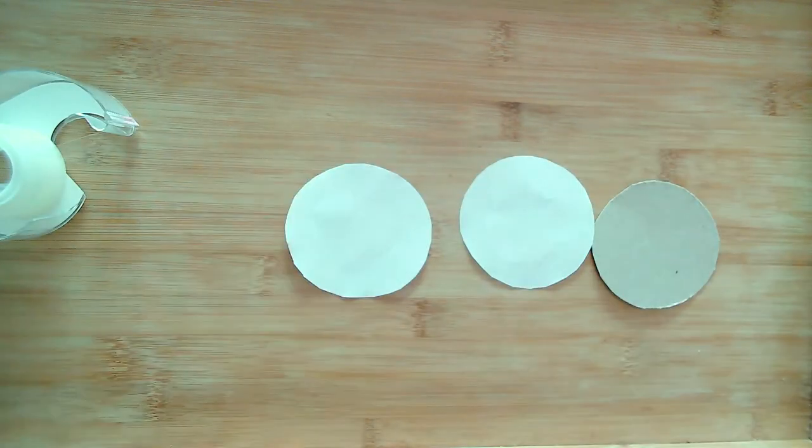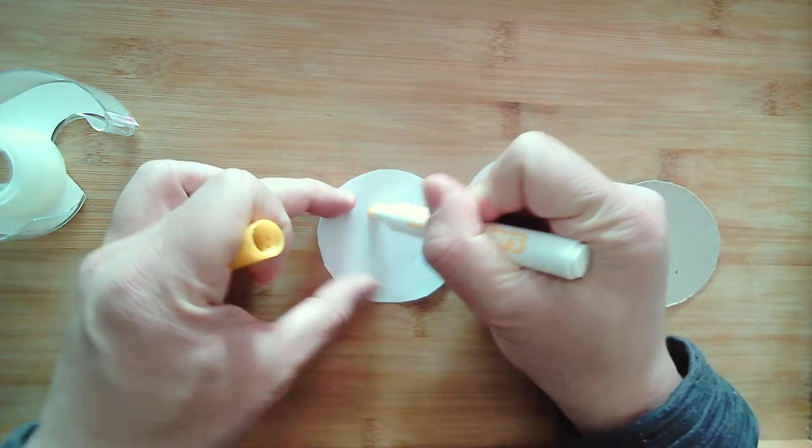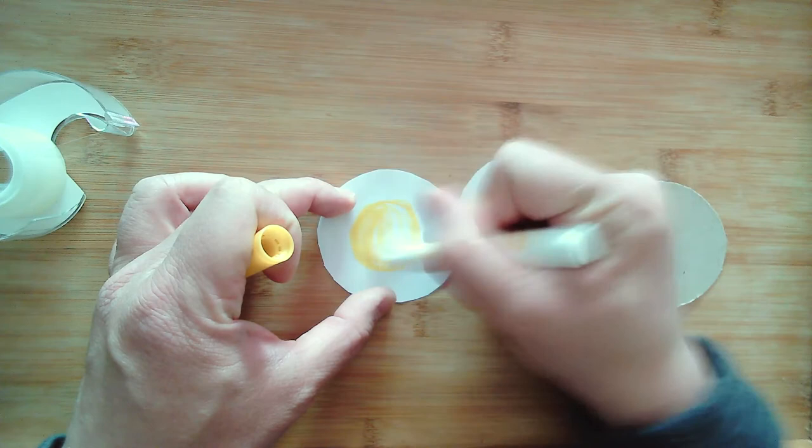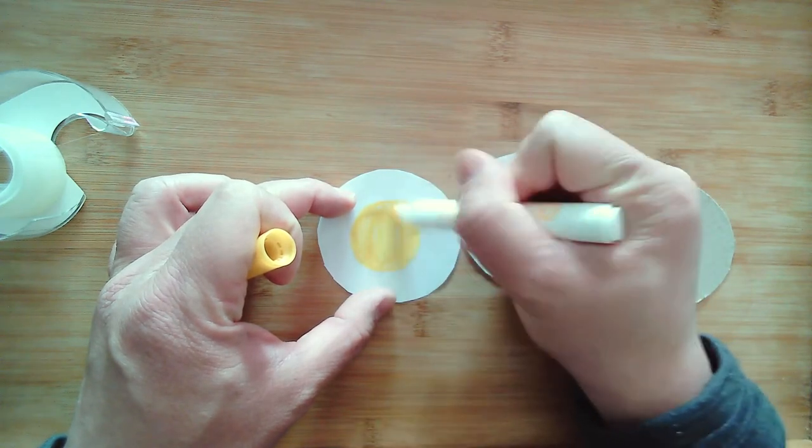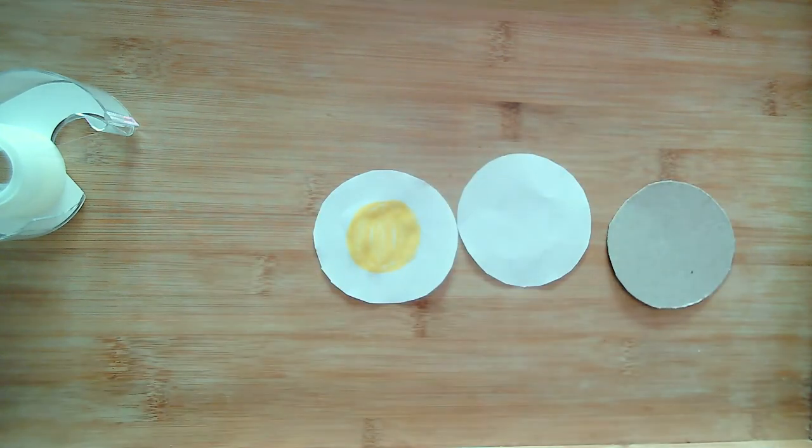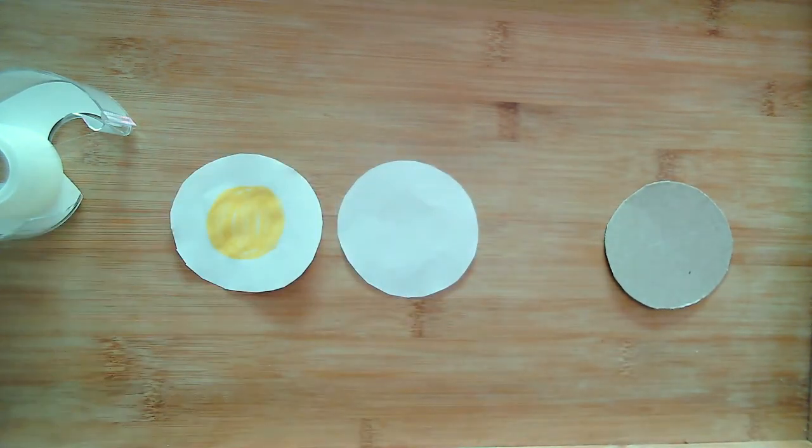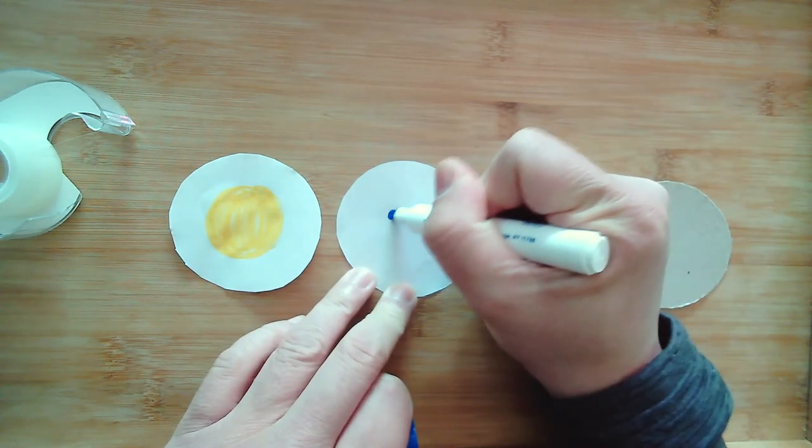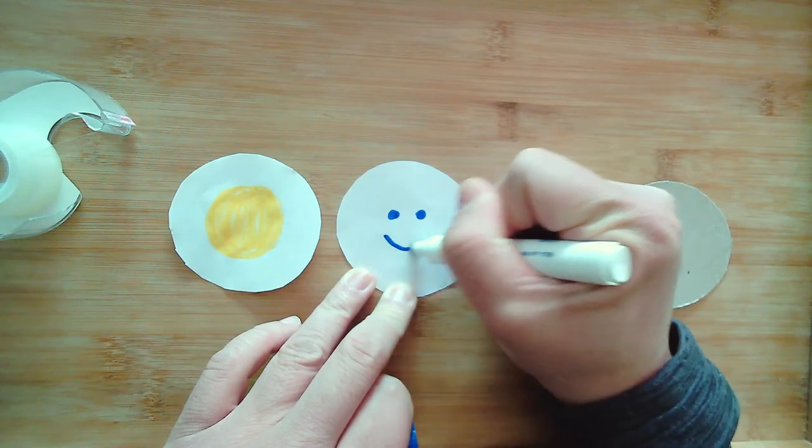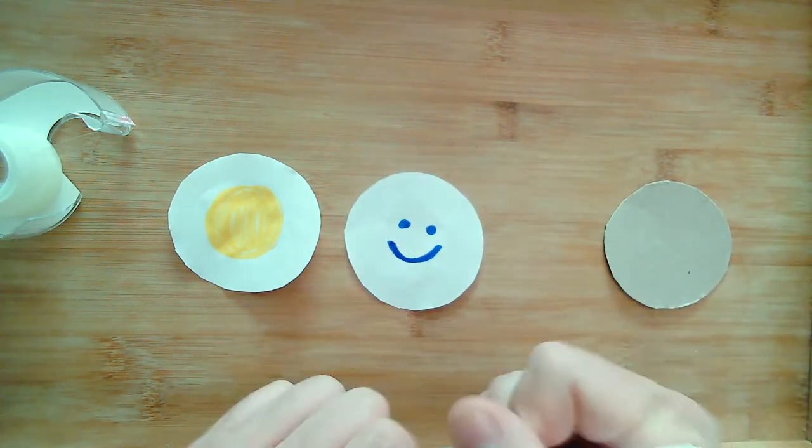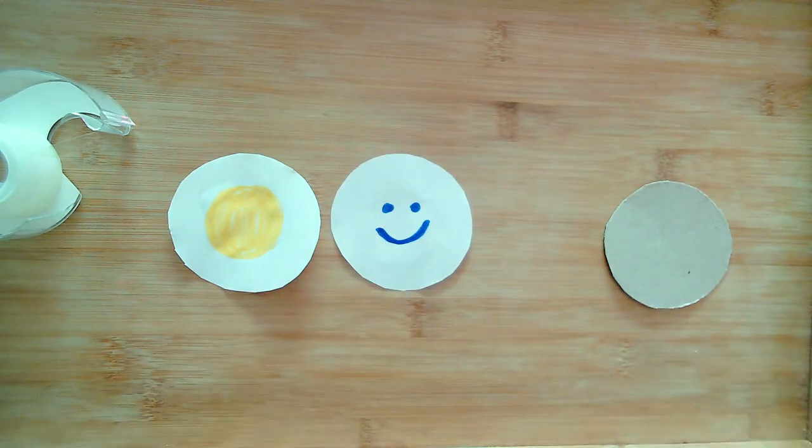And then you're going to basically do the same thing. You're going to do your drawings. I'm going to do something really simple here. I'm going to do just like a yellow circle here. And then on my second one, I'm going to draw a smiley face. So I'm just going to try to make the classic yellow smiley face with my Thaumatrope.